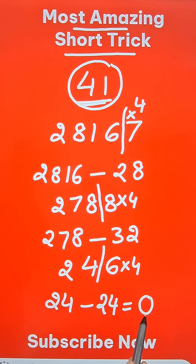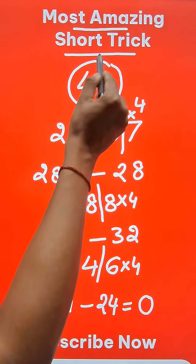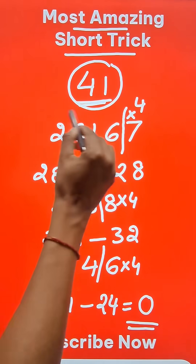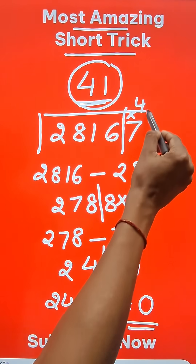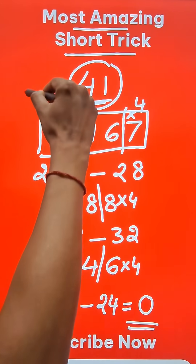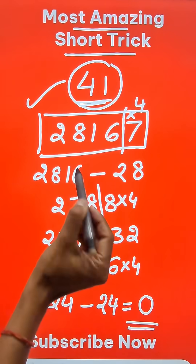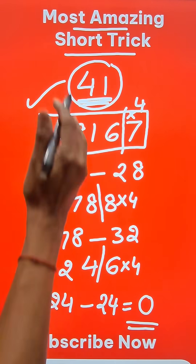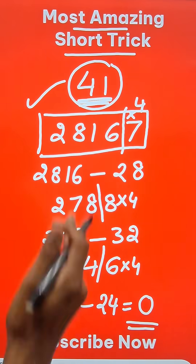And whenever you obtain a 0, or a multiple of this number as the last result, the original number is divisible by 41. So this is the divisibility rule of 41.